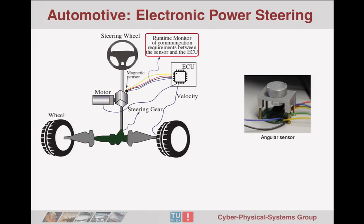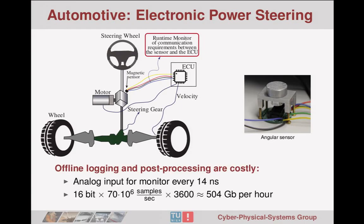To set the stage, the application is electronic power steering. We apply runtime monitoring on an angular sensor which measures the rotation of a steering wheel and sends the angular data to the ECU. The ECU, based on the steering wheel velocity and other data, decides how to activate the motor. Whenever one wants to check requirements at the electrical level, there are very tight timing constraints, and it's impractical to store the information and do post-processing because tests need to run not just for hours but for days and weeks — an enormous amount of data.